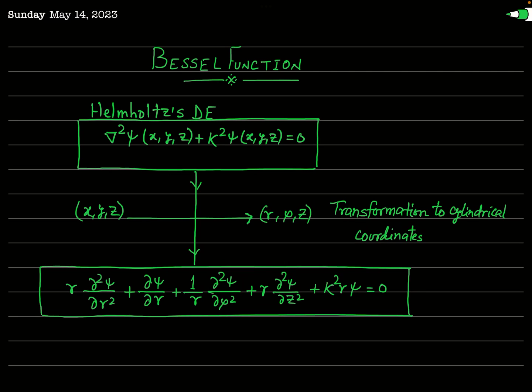We start with the famous Helmholtz equation in Cartesian coordinates. The Helmholtz differential equation in Cartesian coordinates is written as: del-squared psi of (x, y, z) plus k-squared psi of (x, y, z) equals zero.